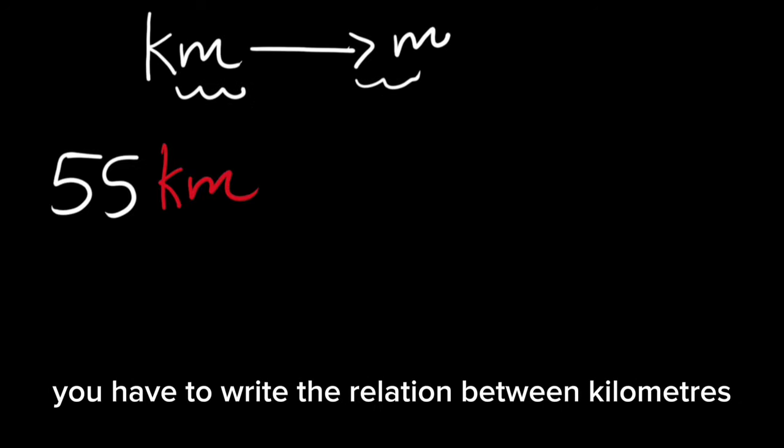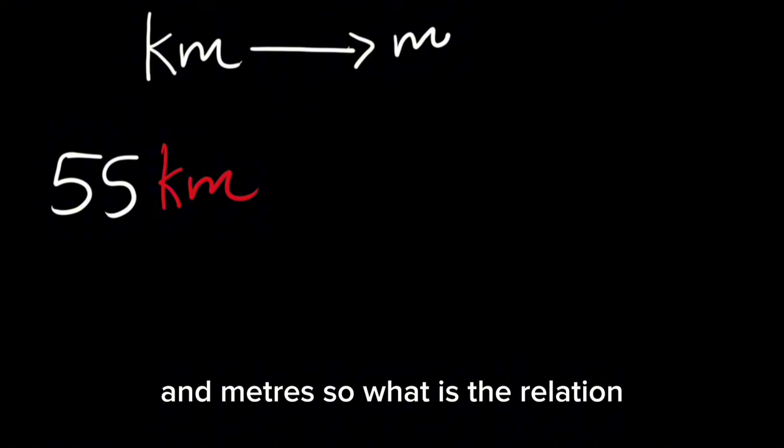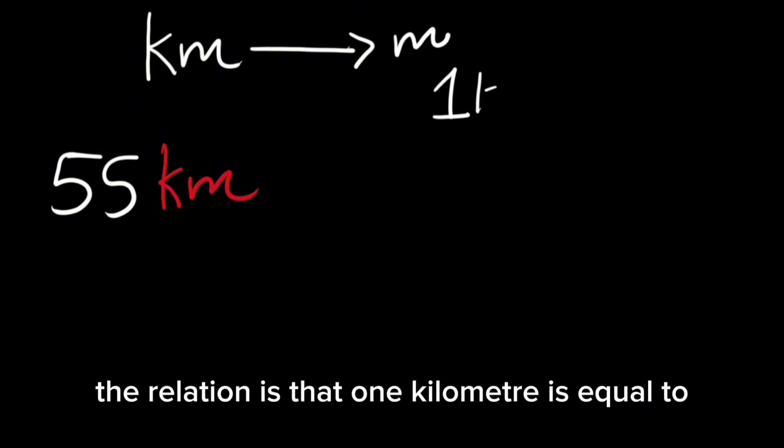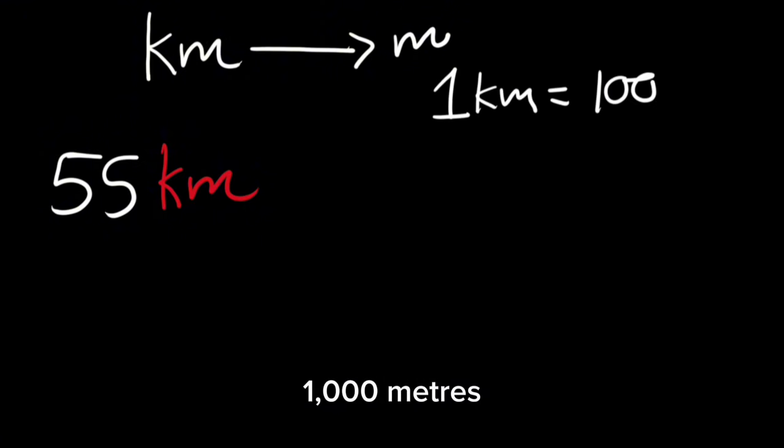So what is the relation? The relation is that one kilometer is equal to one thousand meters. This is the relation.